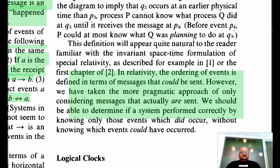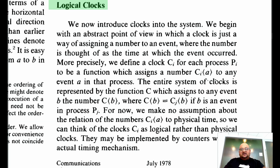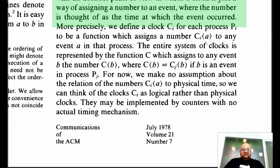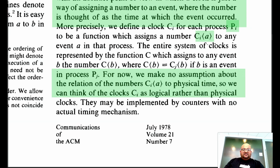Now that we have defined a partial ordering on the events within a distributed system, we can look at how to define a logical clock. A logical clock is simply a way of assigning a number to an event, where that number can be thought of as the time at which the event occurred. The notation we use is Ci of event A — the number assigned to event A in the ith process within our distributed system. These numbers are purely logical and have no relationship to physical time.